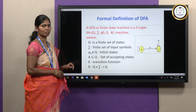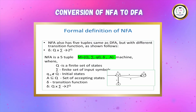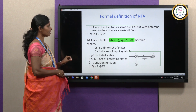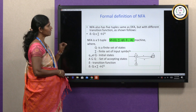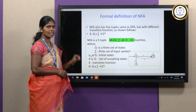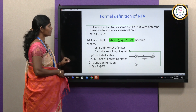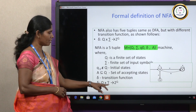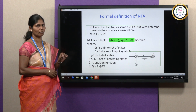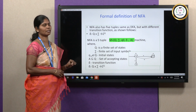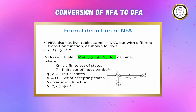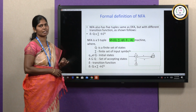The second type of finite automata is Non-Deterministic Finite Automata. The NFA also has the same set of tuples as DFA — five tuples: capital Q, sigma, Q naught, A, and the transition function del. The difference between deterministic and non-deterministic is in terms of the transition function. The transition function of NFA is Q cross sigma tends to 2 power Q, where 2 power Q is nothing but a power set. That means from one state for one symbol, it can have more than one transition. For example, from state Q naught for symbol A, it is going to Q1 as well as Q2.